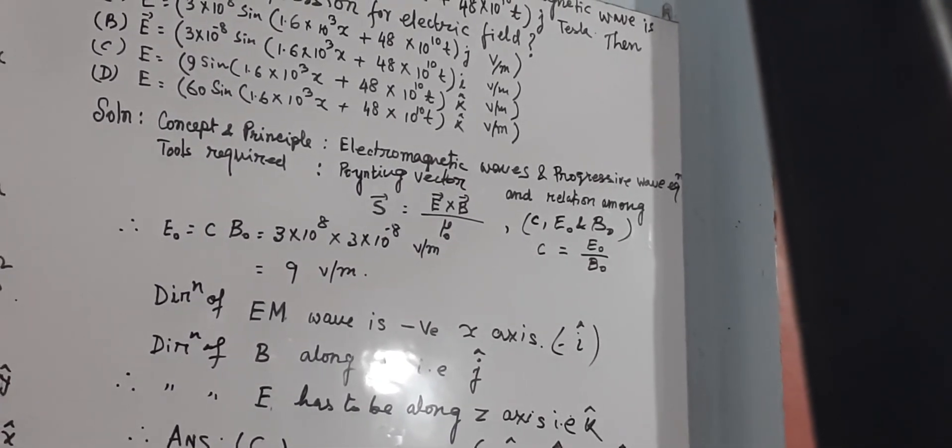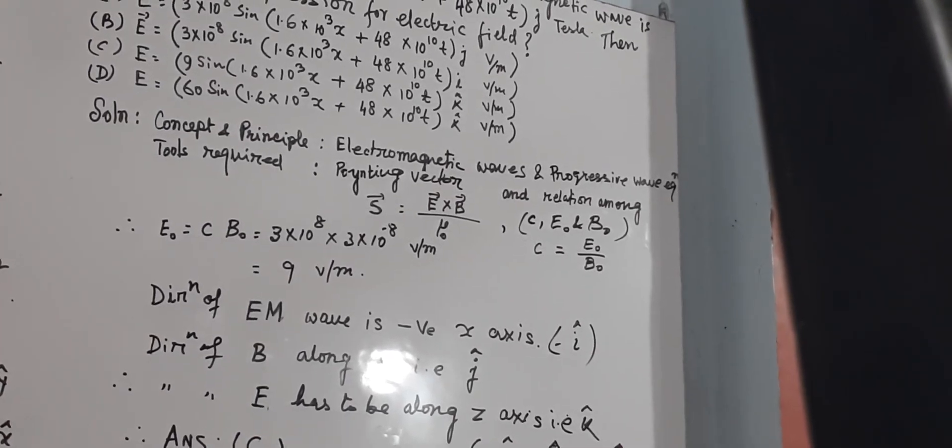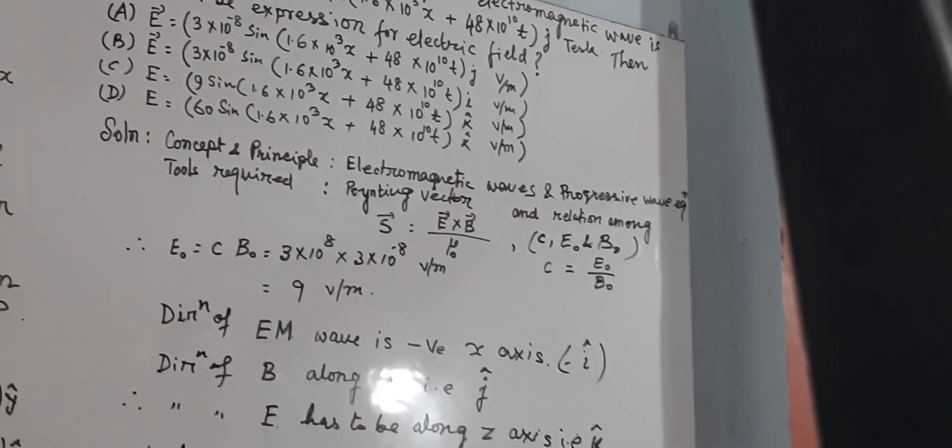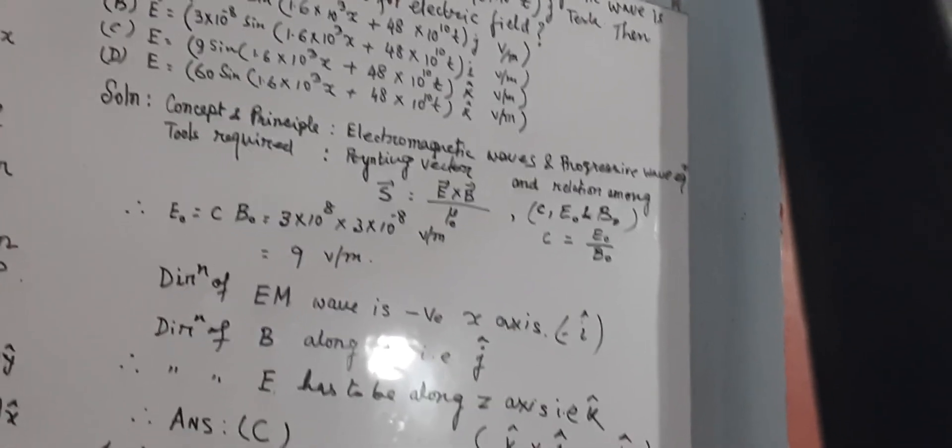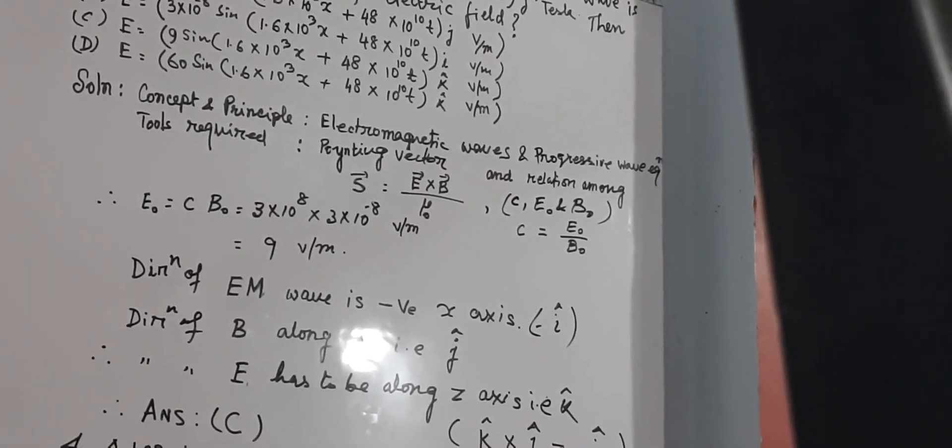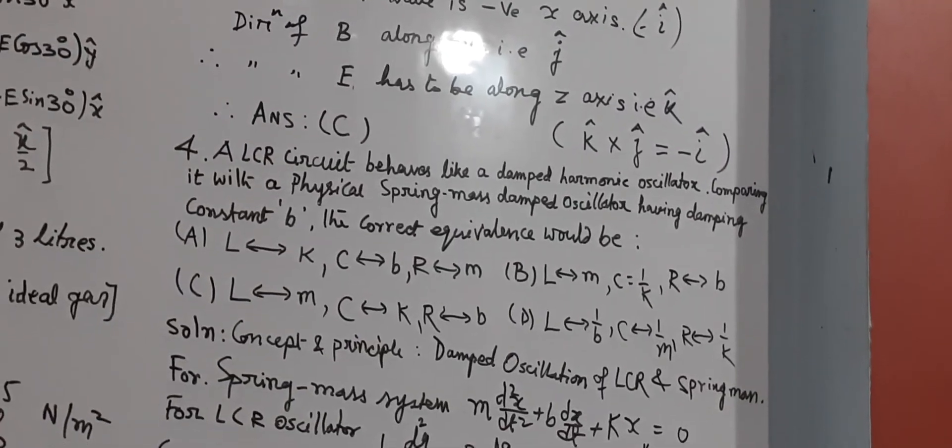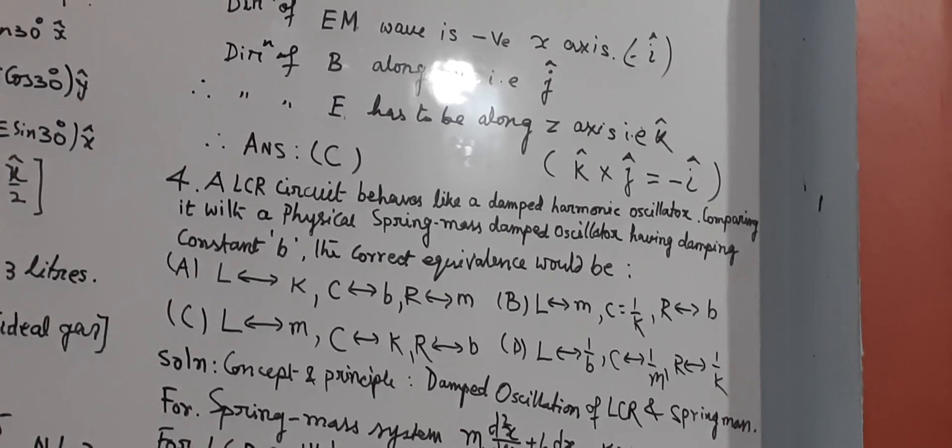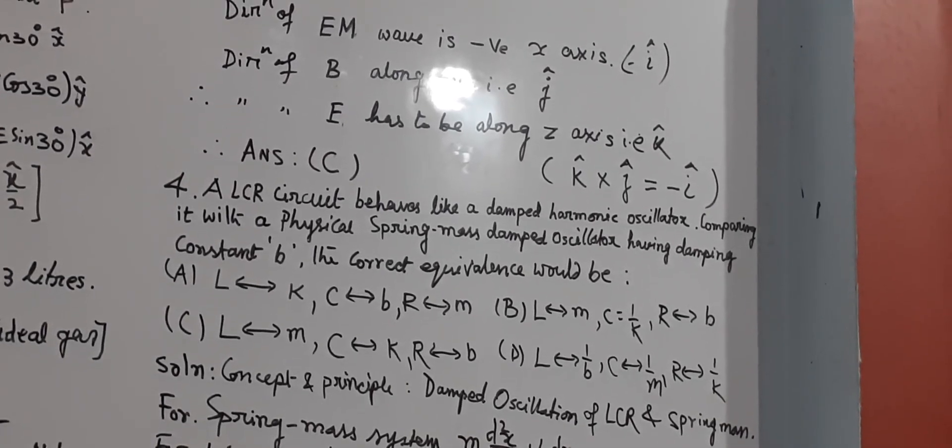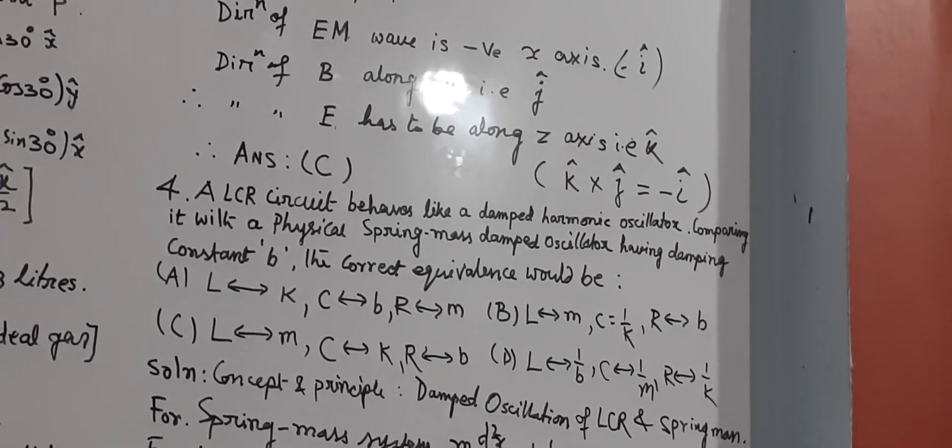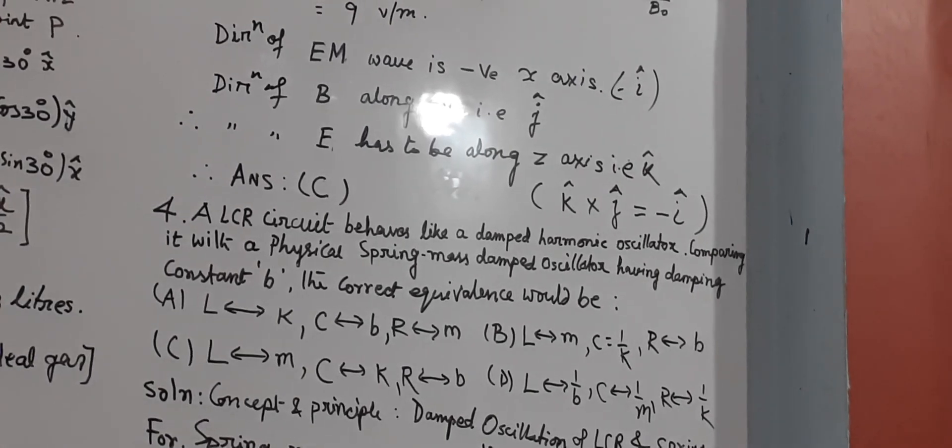Relation among C is, that is, C equal to E naught by B naught, we can find out E naught, that is, 9 volt per meter. Direction of electromagnetic wave, as per equation provided, that is, understood that it is negative x-axis minus I direction. Direction of B is along magnetic field along Y axis, that is J, it is given in the problem.